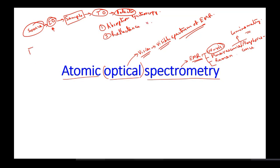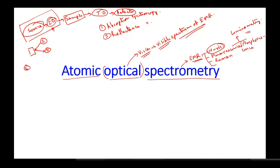In reflectance spectroscopy, we have the sample and the source, excitation optics, and detector on the same side. In reflectance, both source and detector are on the same side, whereas in absorption, the source and detector are on opposite sides of the sample.